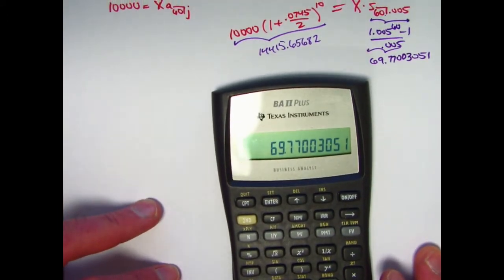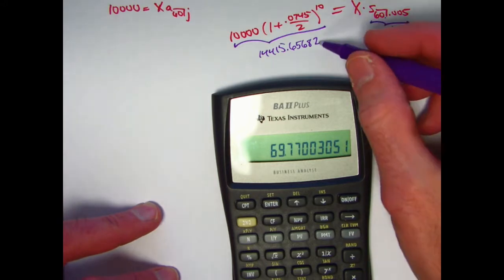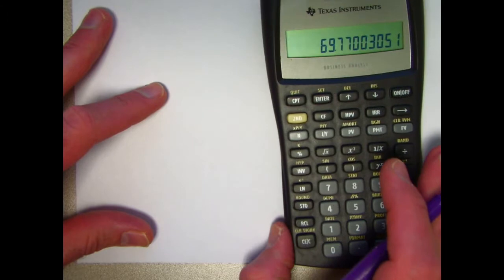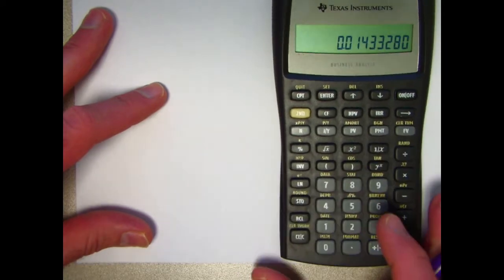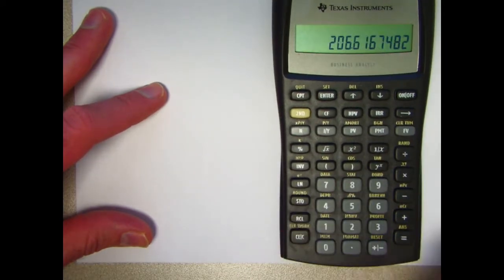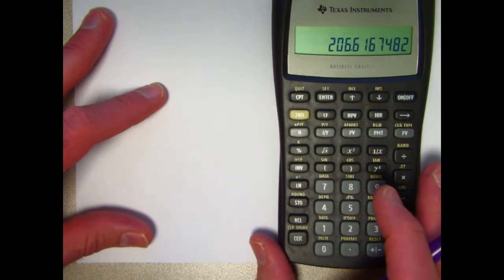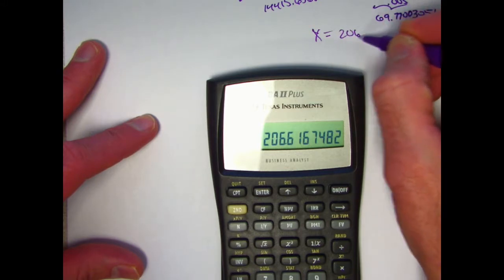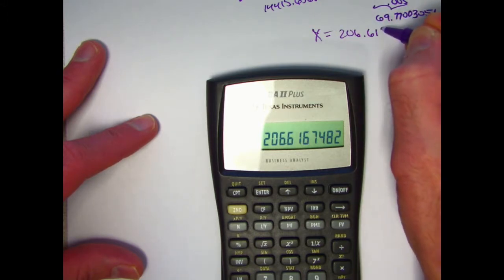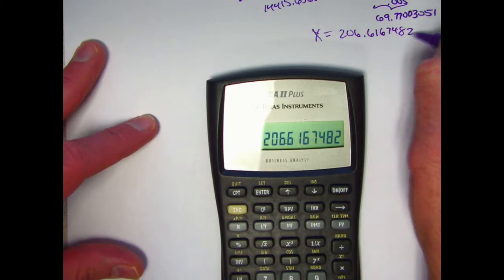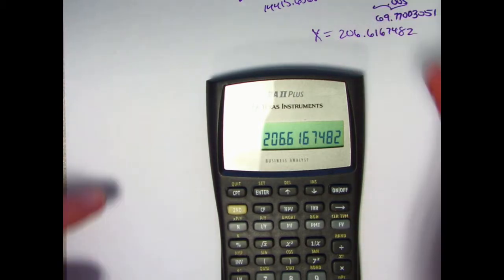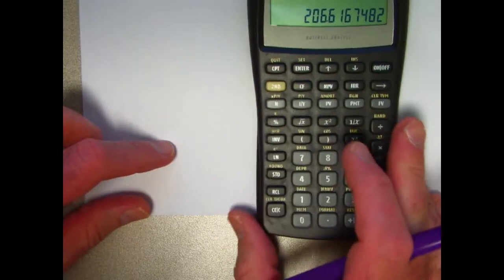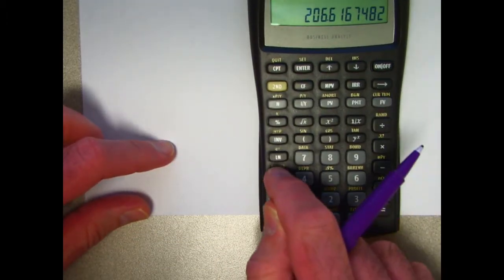Taking the reciprocal of that s-angle-60 value and multiplying by the amount stored in register zero gives us X. X is approximately $206.6167482. I'll store this value in register zero now, replacing the previous stored value, as I'll need it when solving for j.